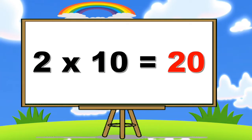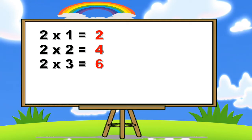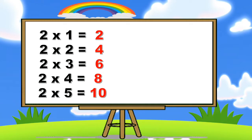Two ones are two. Two twos are four. Two threes are six. Two fours are eight. Two fives are ten. Two sixes are twelve.